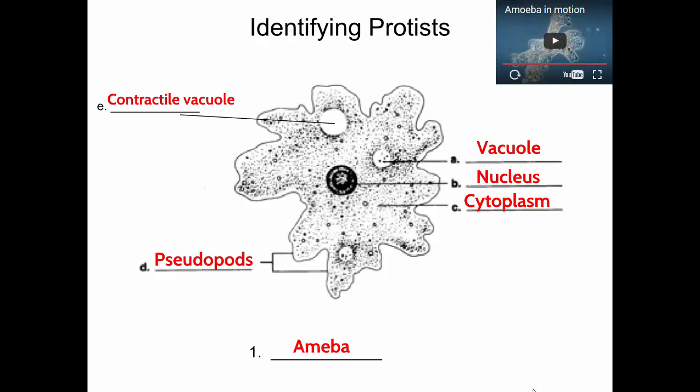You're going to see in the paramecium and in the euglena it looks different. In the amoeba it's just a sort of circular vacuole. There are actually many vacuoles — this is another food vacuole. Every time the amoeba is ingesting food, it forms a new food vacuole, so there would be many of them.